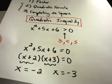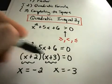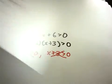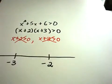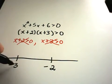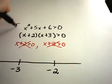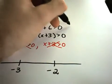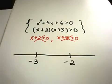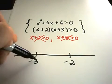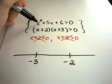The solutions to our equivalent quadratic equation were negative 2 and negative 3. What you do is make a number line and put those numbers on it — negative 3 and negative 2. Then you have to plug negative 3 back into your inequality. Both forms — x squared plus 5x plus 6 greater than 0 and x plus 2 times x plus 3 greater than 0 — are equivalent, so you can use either.